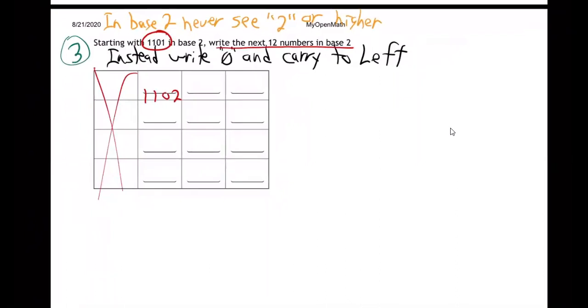Well, what do I do about it? I write a 0 and I carry. 1, 1, 1, 0. Does that make sense? See how? So in base 2, you're never going to see a 2 or higher. Instead, you write a 0 and carry 1 to the left. So it's 1110.